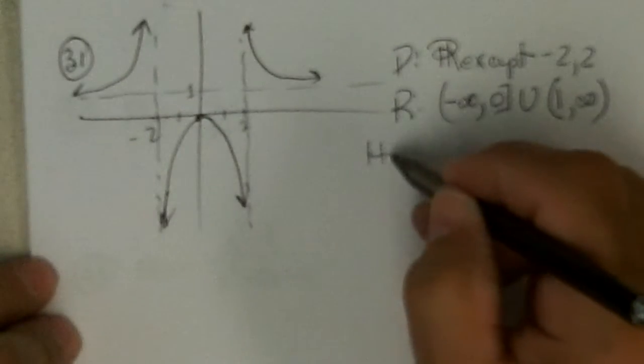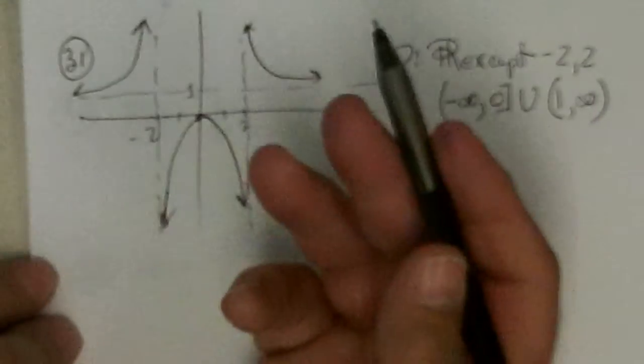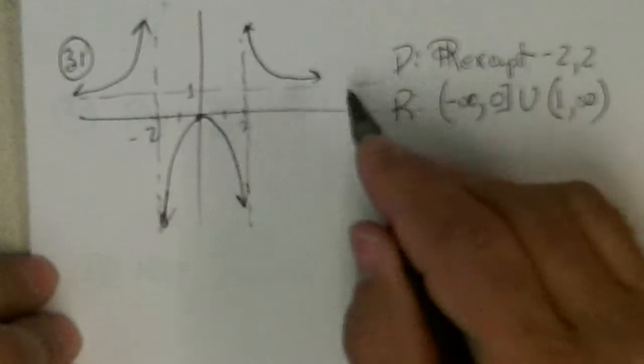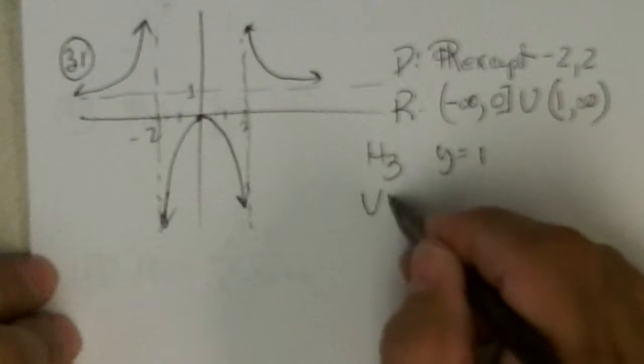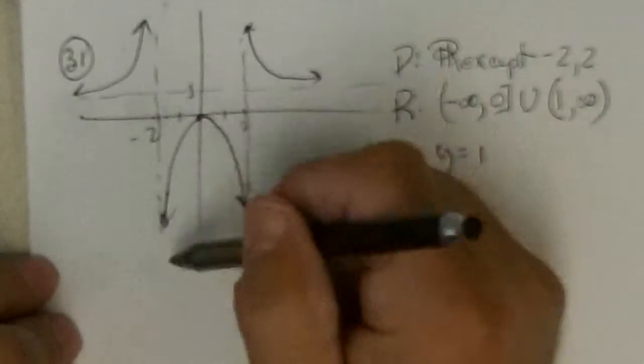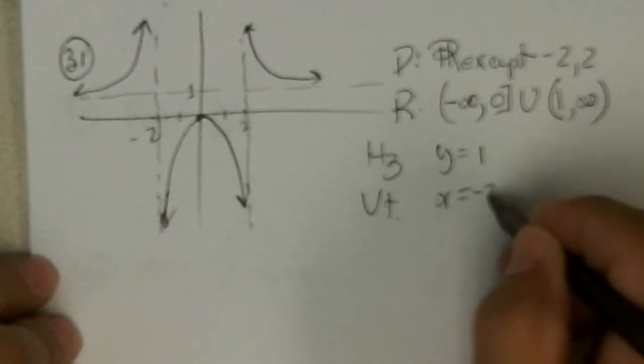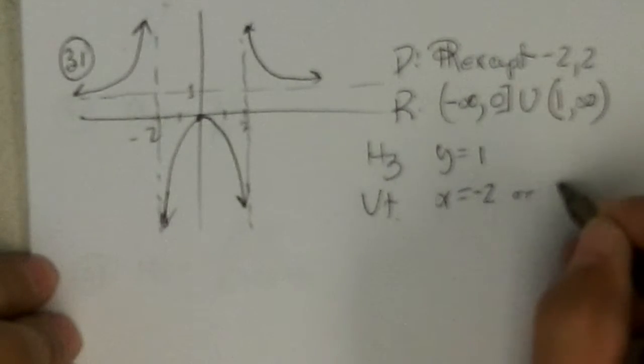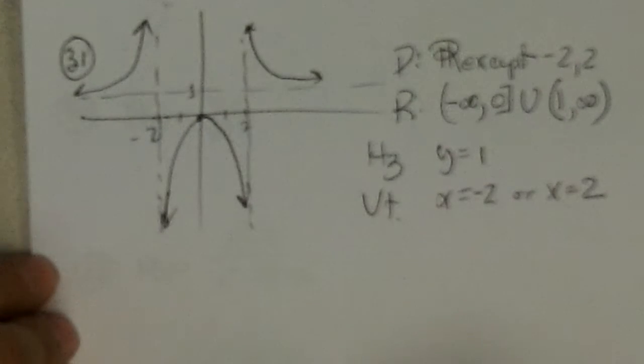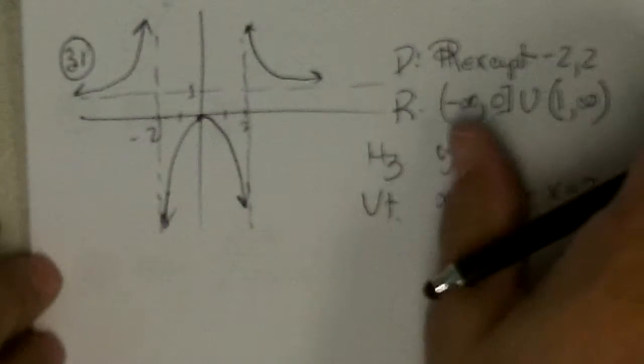Is there any horizontal or oblique? Well, this is not a slanting line. So it's not oblique. It's just a horizontal at y equals 1. And there's a vertical asymptote at x equal negative 2. Or at x equal to 2. And that's all we ask for on 31.